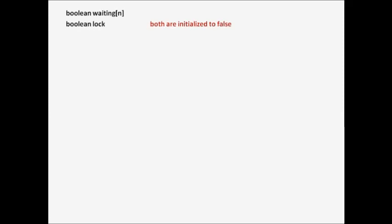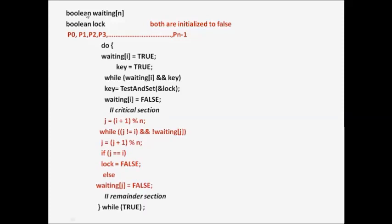In this case there will be two common data structures: one is a boolean array `waiting` of size n, and another is a boolean variable `lock`. Both are initialized to false. In the system there are n processes p0, p1, p2, p3, and so on up to p(n-1). There is also a local boolean variable `key`, which is also initialized to false.